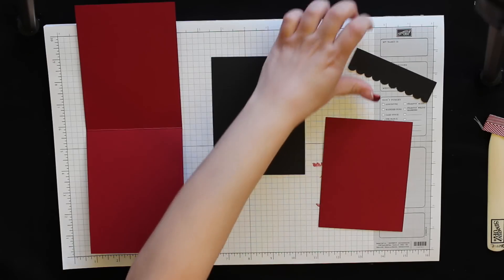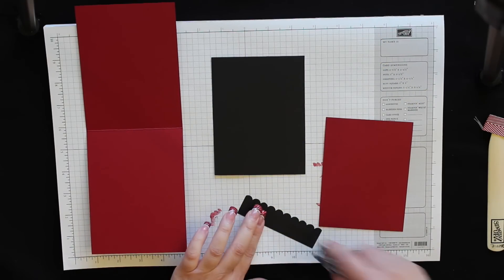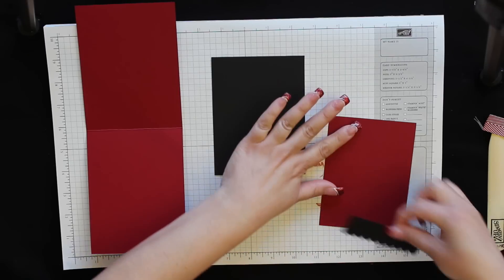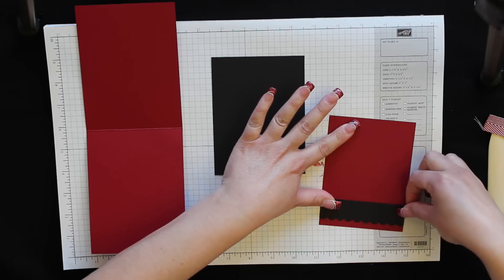To start with, I'm going to take this piece of basic black cardstock, put some of these on the back, and adhere it to the cherry cobbler's cardstock about a quarter inch up from the bottom.